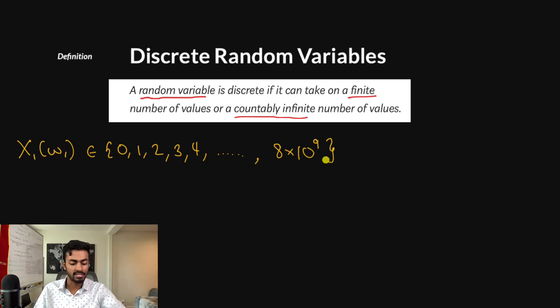Now, this number, it's a finite set in itself, right? It has 8 billion values, or 8 billion and one values. And so it is finite. And because it is finite, we know that we can say that X₁ is a discrete random variable.